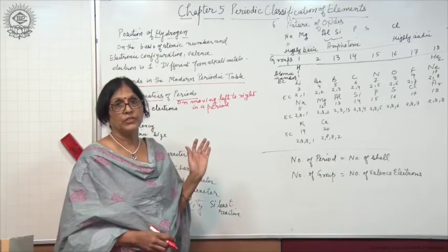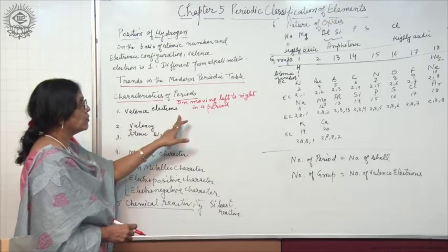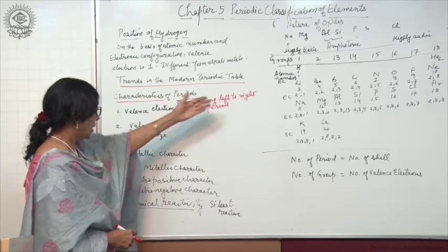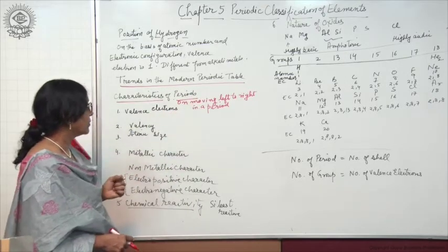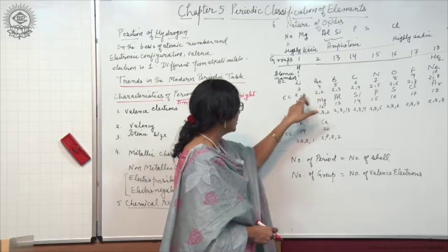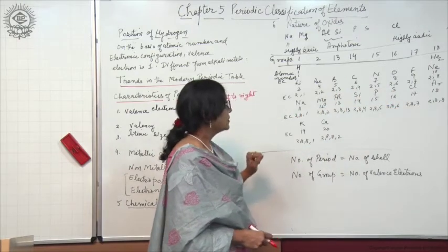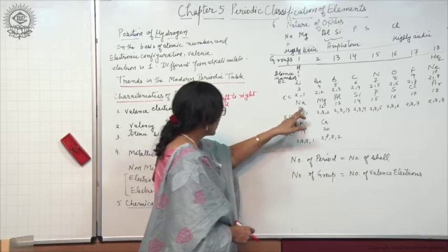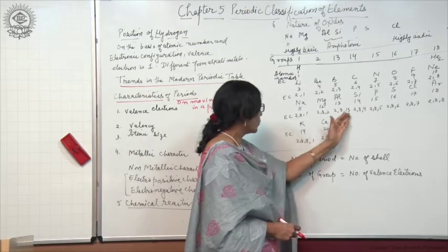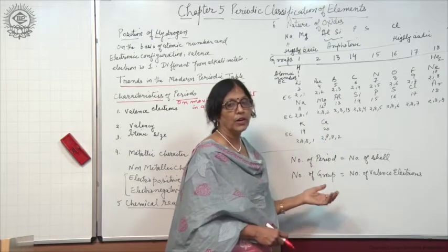We also come to know whether it is a metal, non-metal, or a metalloid in between. On the basis of this, we will now study the characteristics of periods. Looking at valency electrons: on moving left to right in a period, the valency electrons increase from 1 to 8, as you can see from the electronic configuration of the third period.